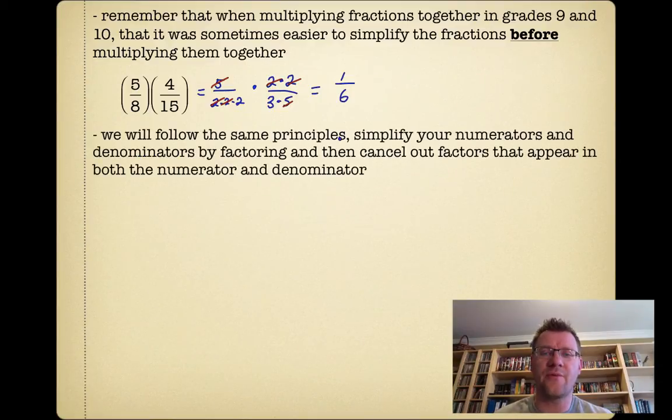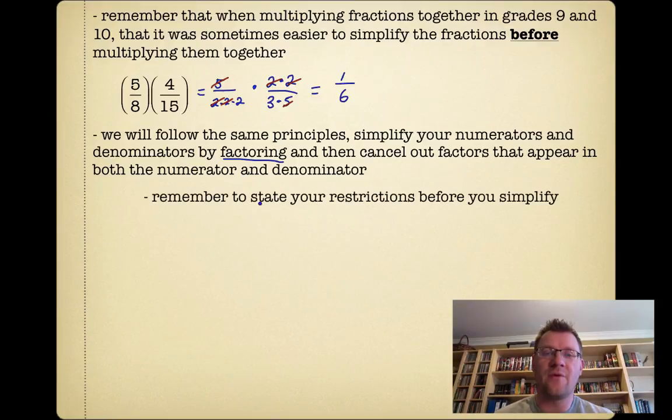We're going to follow the same principles. Simplify your numerators and denominators by factoring first, then cancel out factors that appear in both the numerator and denominator. Remember to state your restrictions before—that's the keyword—before you start simplifying, before you start canceling stuff out.